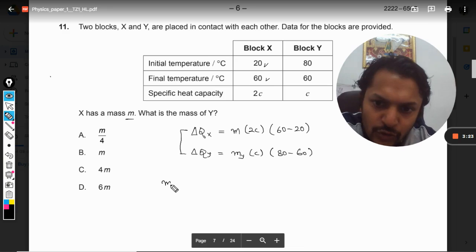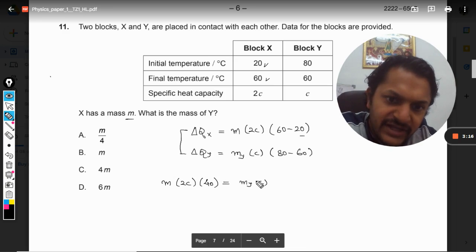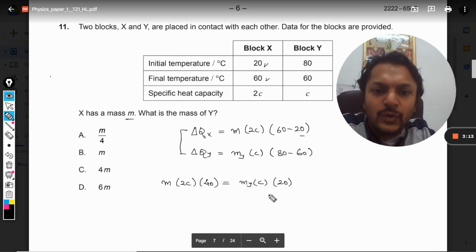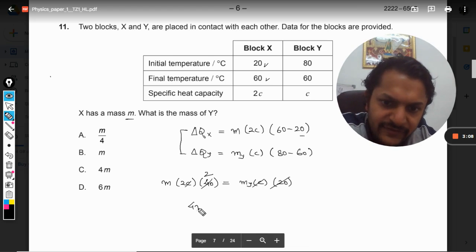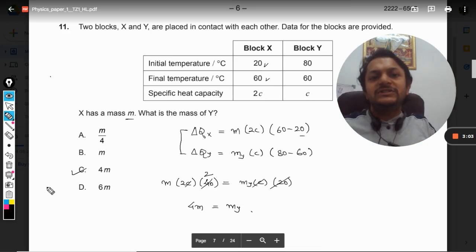Now these two heats should be equal to each other. So we keep it like this: 60 minus 20 is, I'm writing it as 40. Now this MY is a variable we need to find, and 80 minus 60 is 20. So on solving this, we can say that it will be 4M is equal to MY. So our answer is coming out to be C.